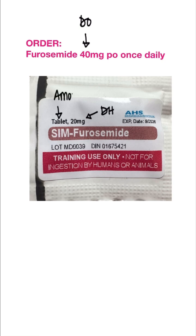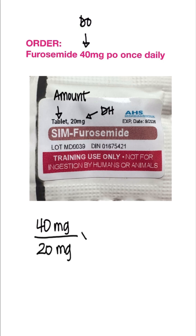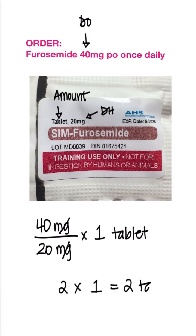So we will write it as 40 milligrams divided by the 20 milligrams that we have per tablet. The milligrams cancel out. 40 divided by 20 is 2, times 1, equals 2 tablets. Hope this helps.